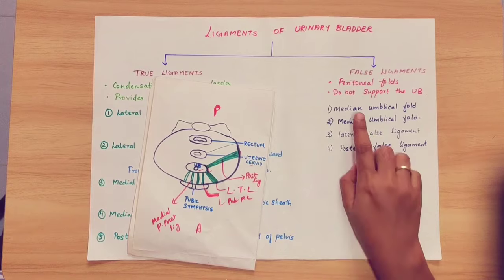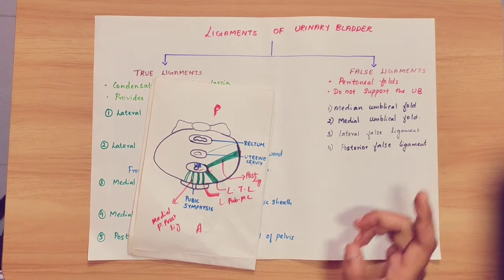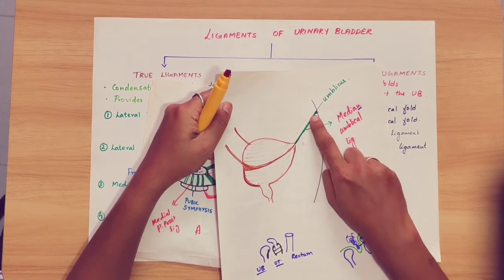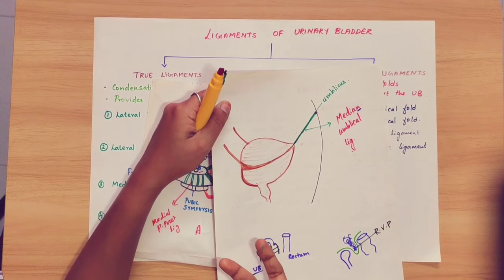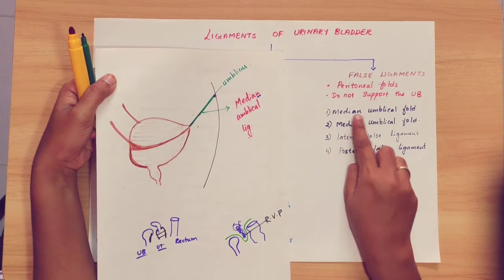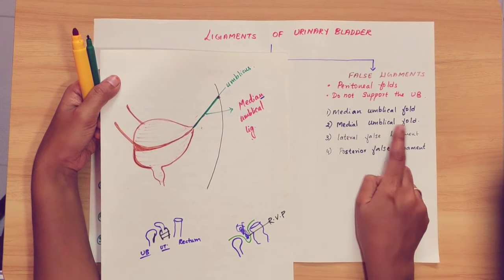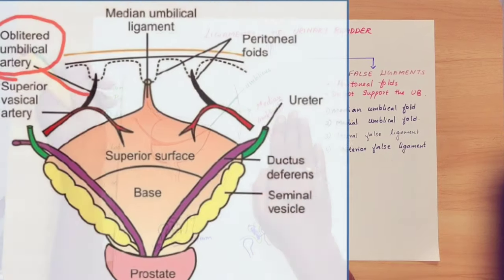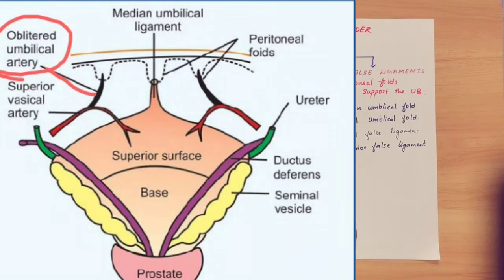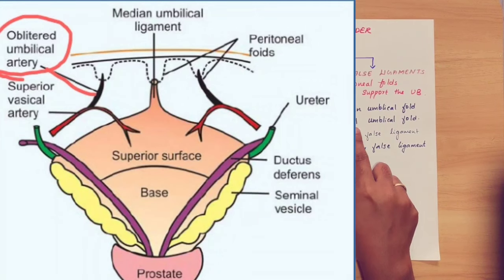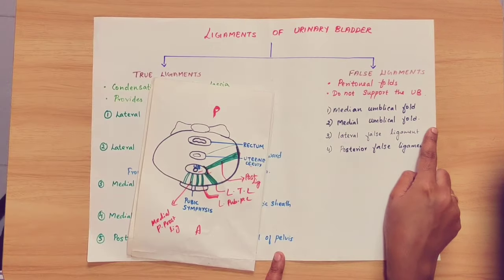The first false ligament is the medial umbilical ligament, also called the medial umbilical fold. In the urinary bladder, there is an obliterated umbilical artery. Along the obliterated umbilical artery, the peritoneum forms a double-layer fold — that is why we call it the medial umbilical fold.